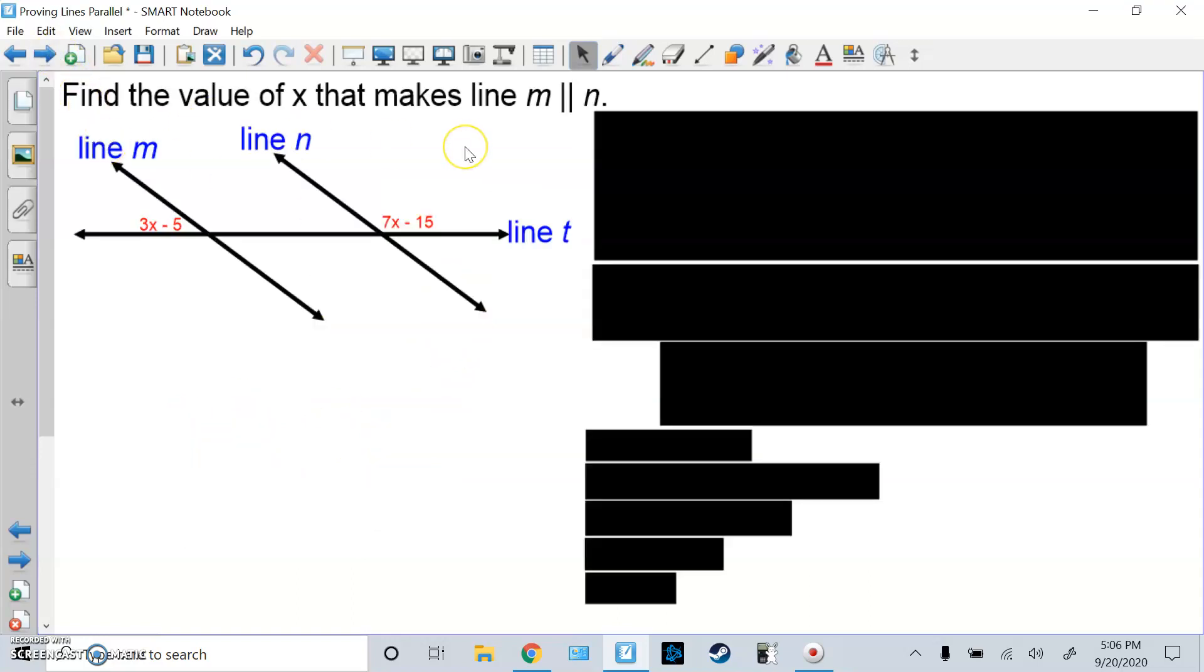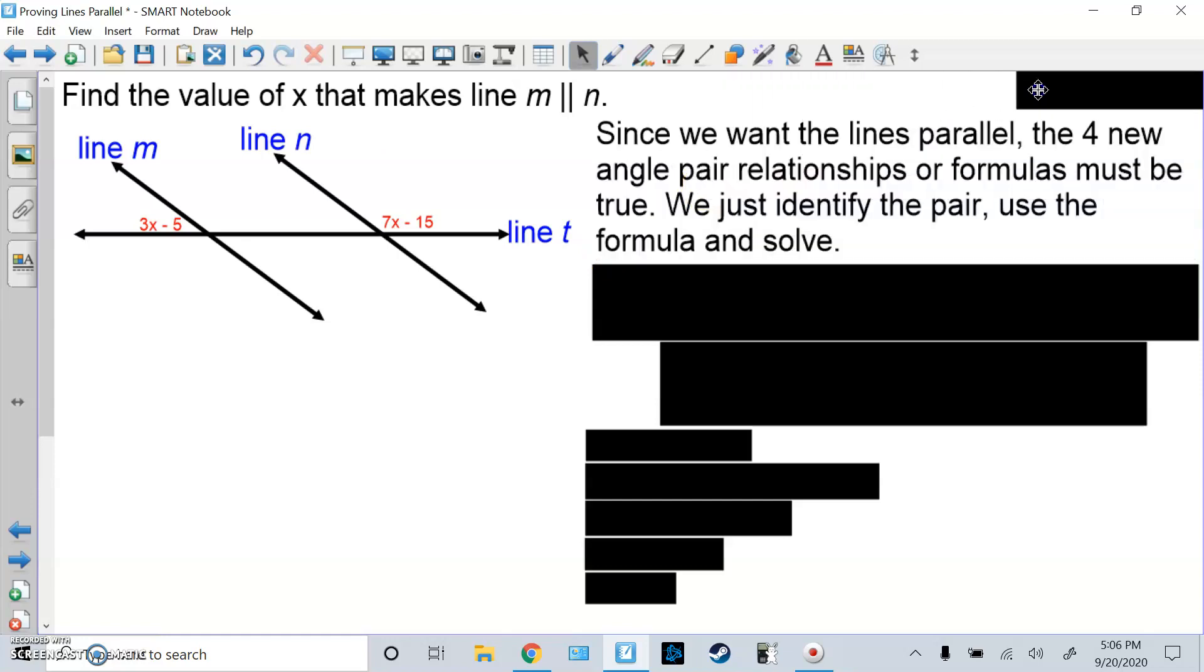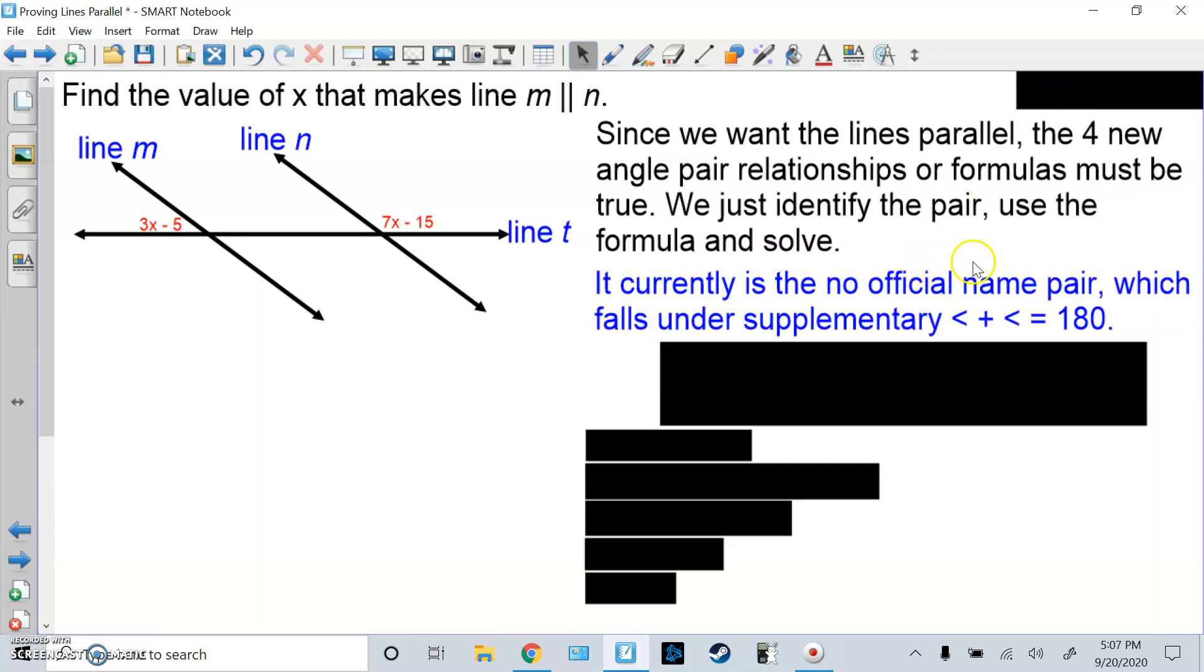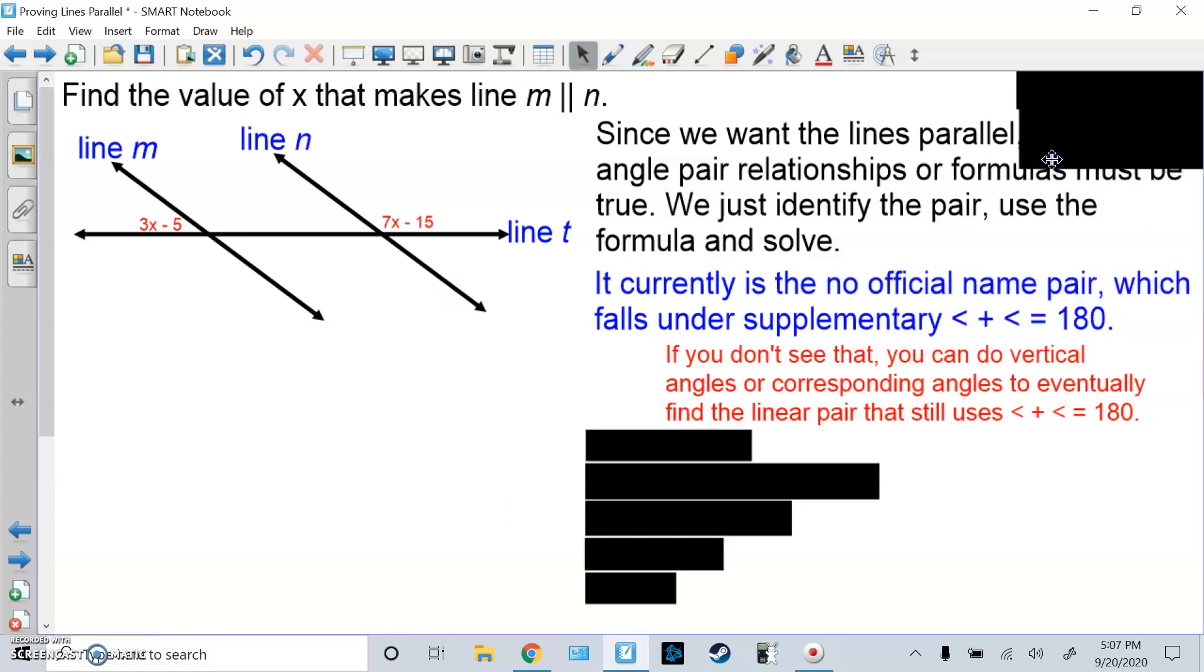Now this is find the value of x that makes line m parallel to n. Because they want us to make it parallel, we can use the formulas. We can use the four new angle pair relationships or formulas. Just identify the pair and use the formulas. Here's 3x minus 5, here's 7x minus 15. Now that is not an official angle pair. That's same side outside, so consecutive exterior, but that's not an official name.